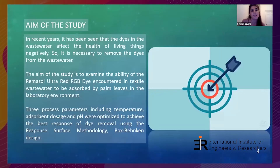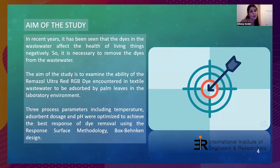In recent years, it has been seen that dyes in wastewater negatively affect health, and removing dyes from wastewater is necessary. Our project's aim is to examine the ability of RGB dye removal from wastewater. Two process parameters include temperature and pH, and the best response of dye removal was studied using response surface methodology with Box-Behnken design.